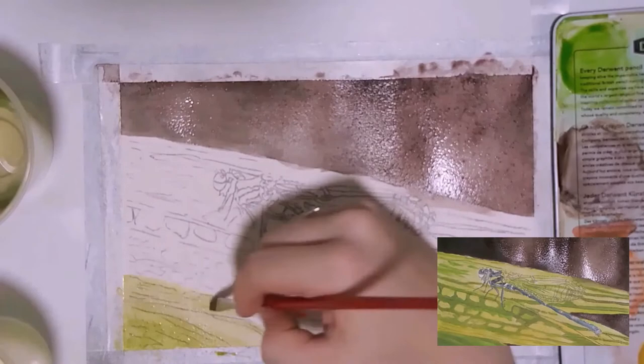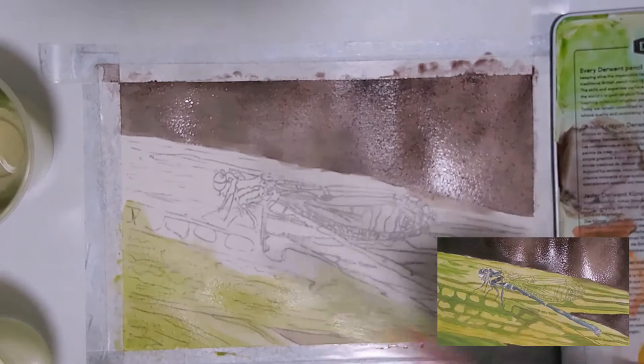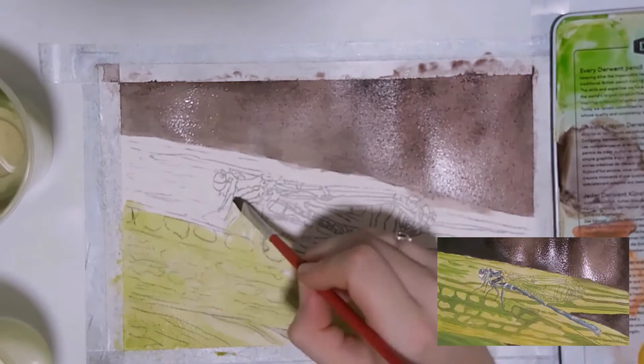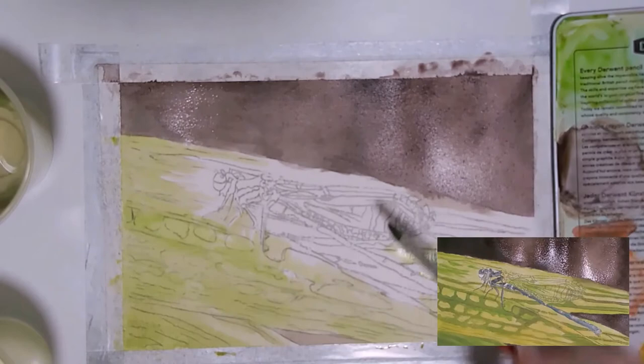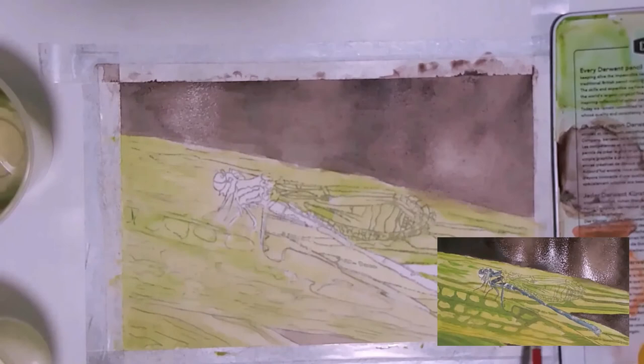If you ever run out of a color you mixed, that's okay. You can always mix up more like I am doing now with a light green. As we paint in this leaf, I mostly want to avoid getting any green on the dragonfly, except for the wing, since by painting on its wing, it will help to make the wings seem more transparent later.